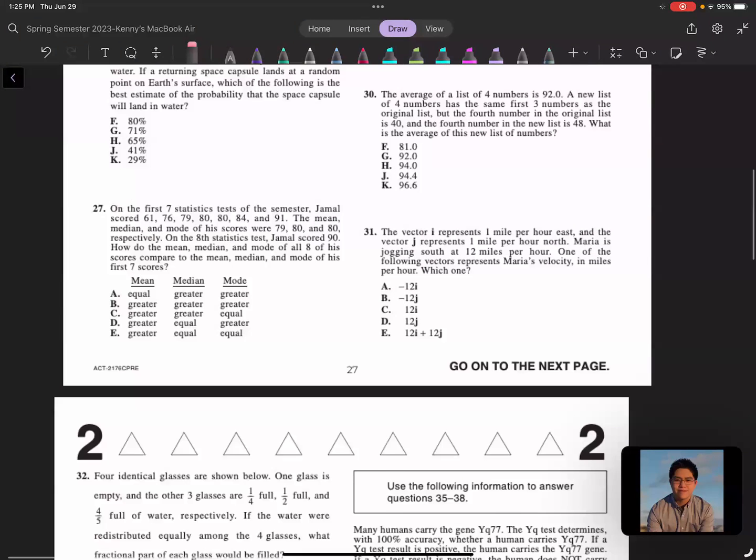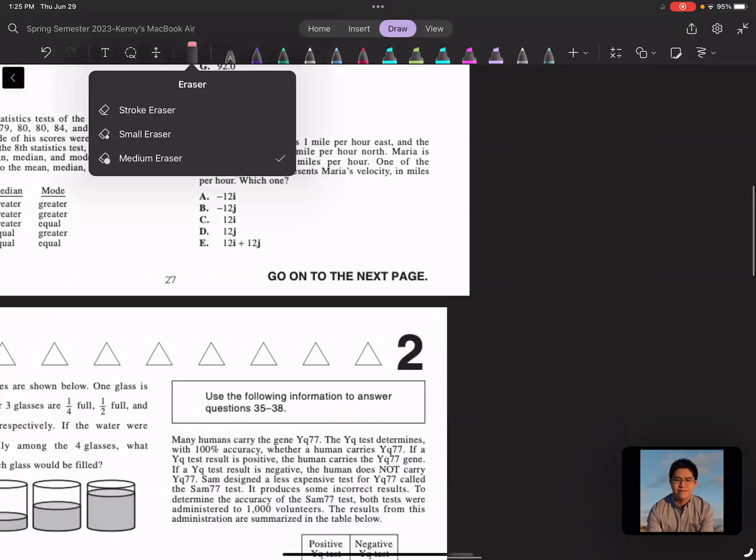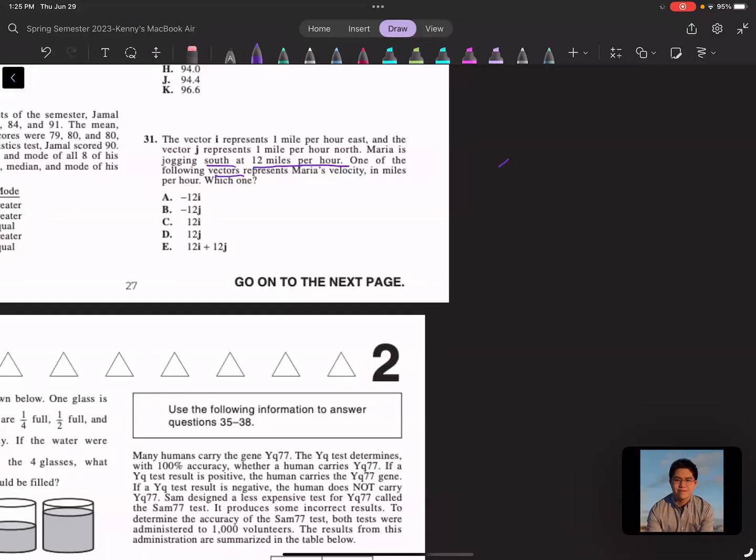Question 31 asks: the vector I represents one mile per hour east and the vector J represents one mile per hour north. Maria is jogging south at 12 miles per hour. One of the following vectors represents Maria's velocity in miles per hour, which one? So let's break it down. What is this question asking us? Well, this question is asking which one of these vectors represents Maria going 12 miles per hour south.